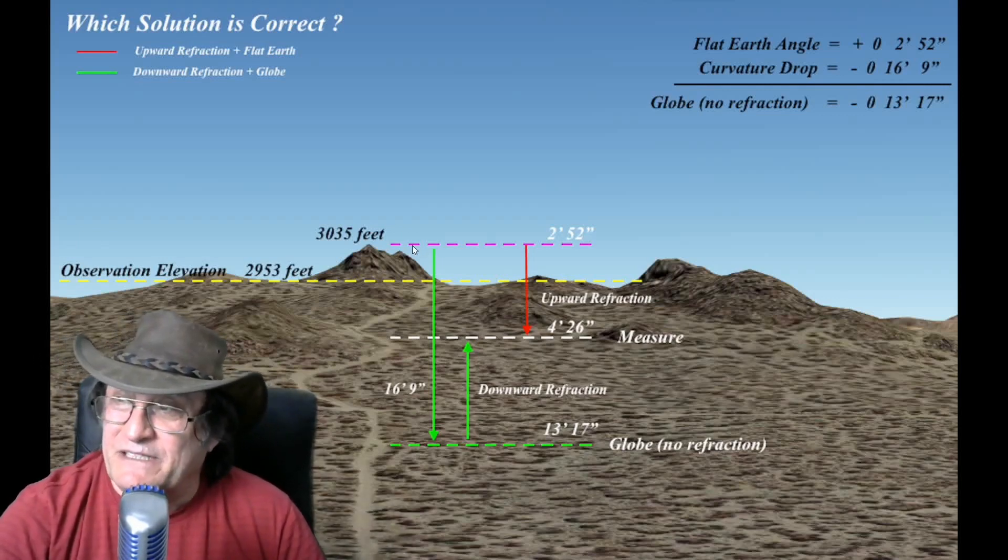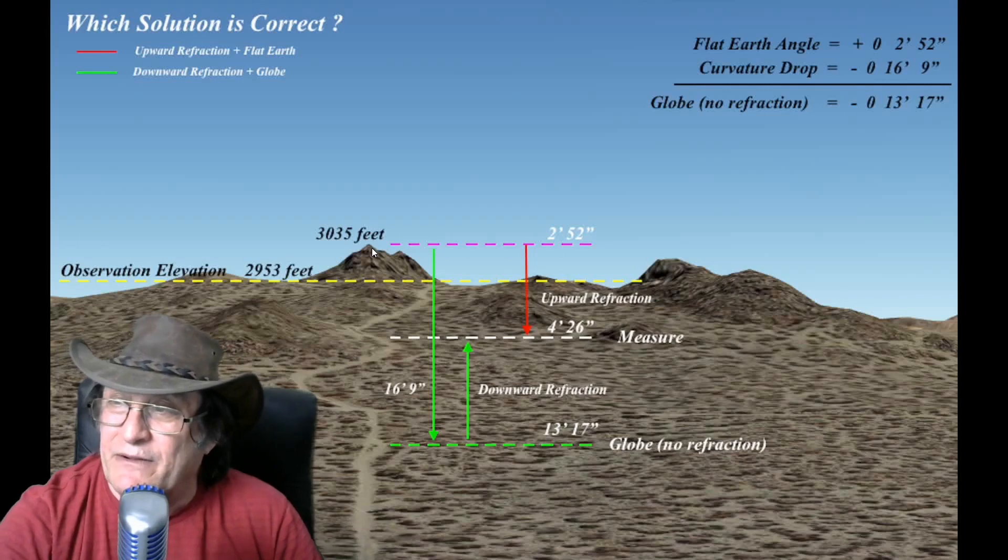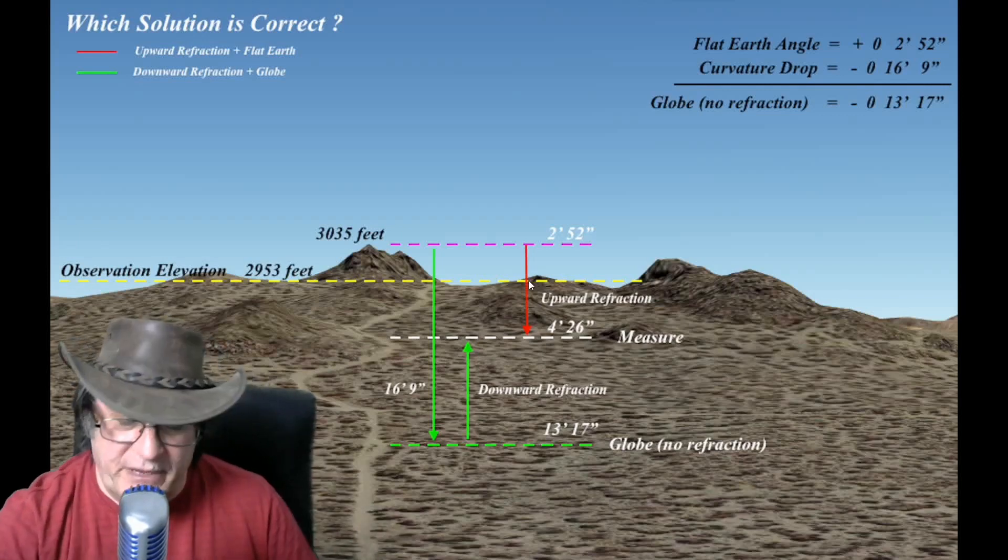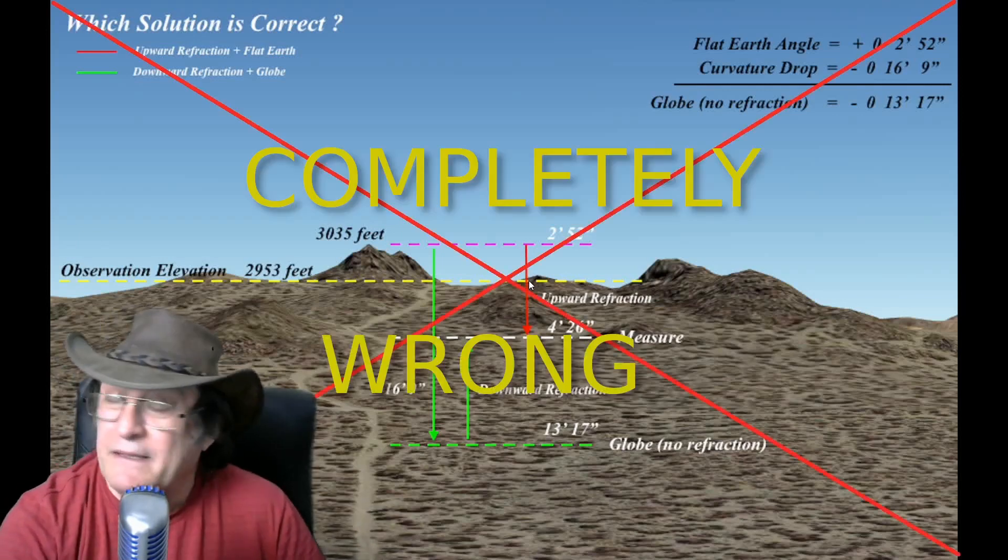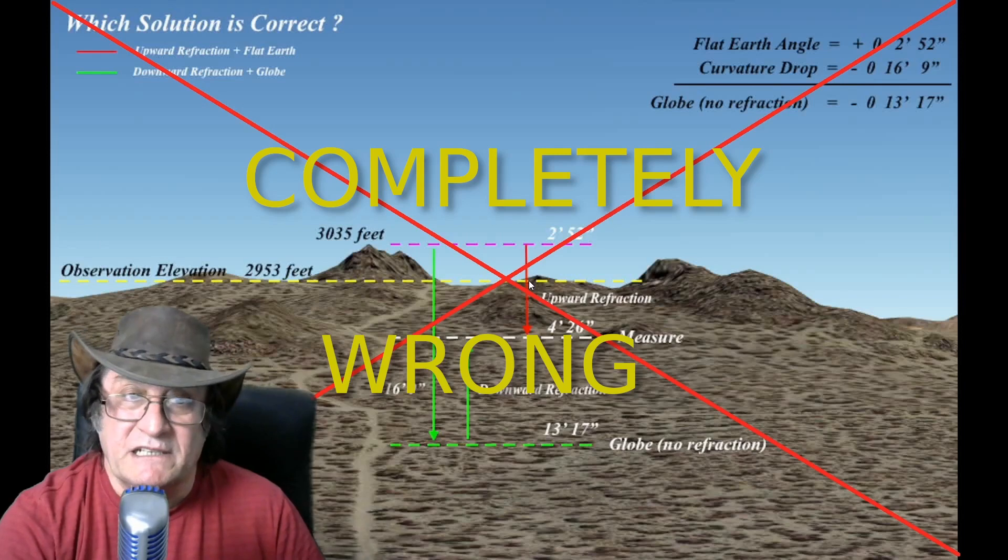Now, the other thing about this diagram, I have no idea why he's got this line here. This point never features anywhere in the calculations, except it's just where he cited from, and then he corrected it for this yellow dotted line here. So, several things about this diagram are just completely wrong.